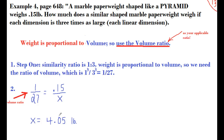Watch this video a few times and try the problems repeatedly. The key concept is to work with the a to b similarity ratio until you get the applicable ratio for your specific problem — whether area or volume — and then use it in a proportion.